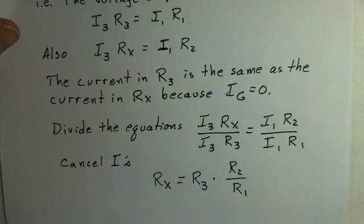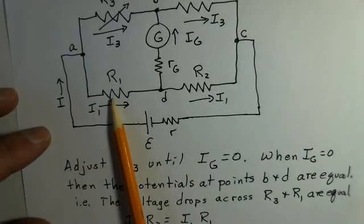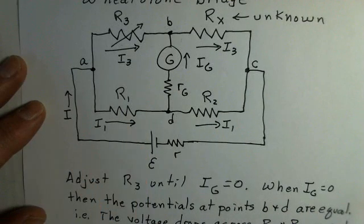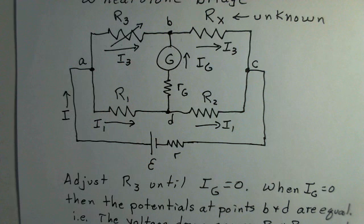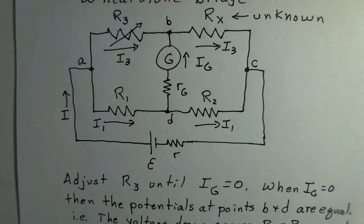This provides a way of making a measurement of an unknown resistance as long as you have good confidence in the values of R1, R2, and R3. So that can be tricky, but if you have reliable resistors for R1, R2, and R3, you can, with confidence, calculate the value of the unknown resistance.